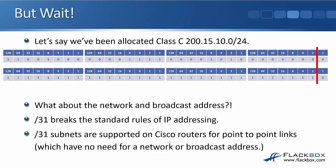But wait — if we're using a slash 31, there's only two possible values to assign to hosts. What about the network and broadcast address? A slash 31 subnet breaks the standard rules of IP addressing where we have to have the network address and the broadcast address at the top and bottom of the range. Slash 31 subnets are however supported on Cisco routers for point-to-point links. On a point-to-point link there's just one side and the other side, so any traffic from here needs to go to the other side. There's nowhere else for it to go, so there isn't really any point in having a network and a broadcast address. That's why Cisco allowed that exception.